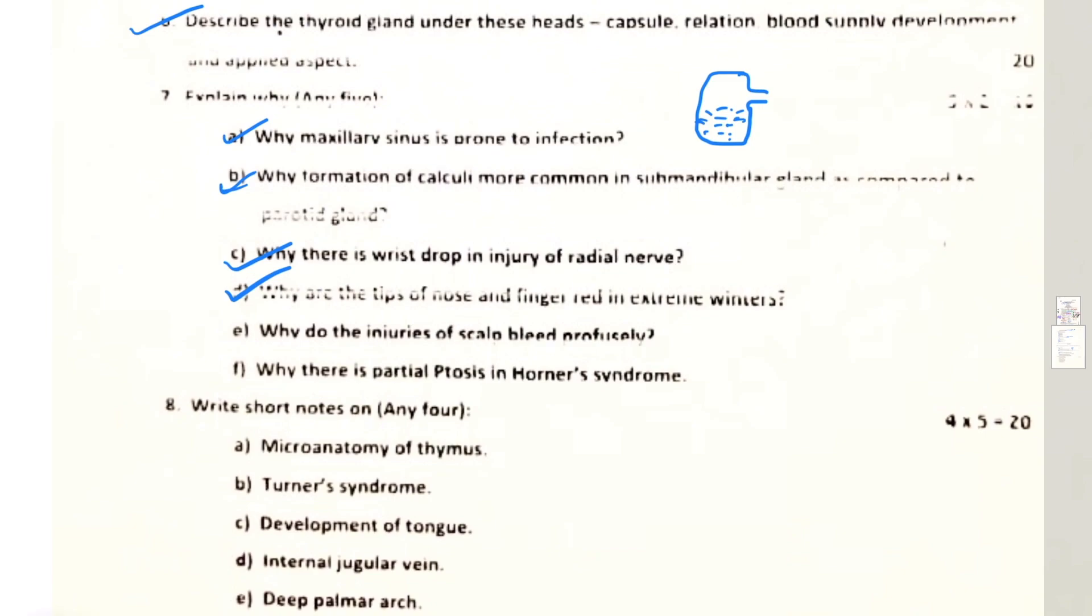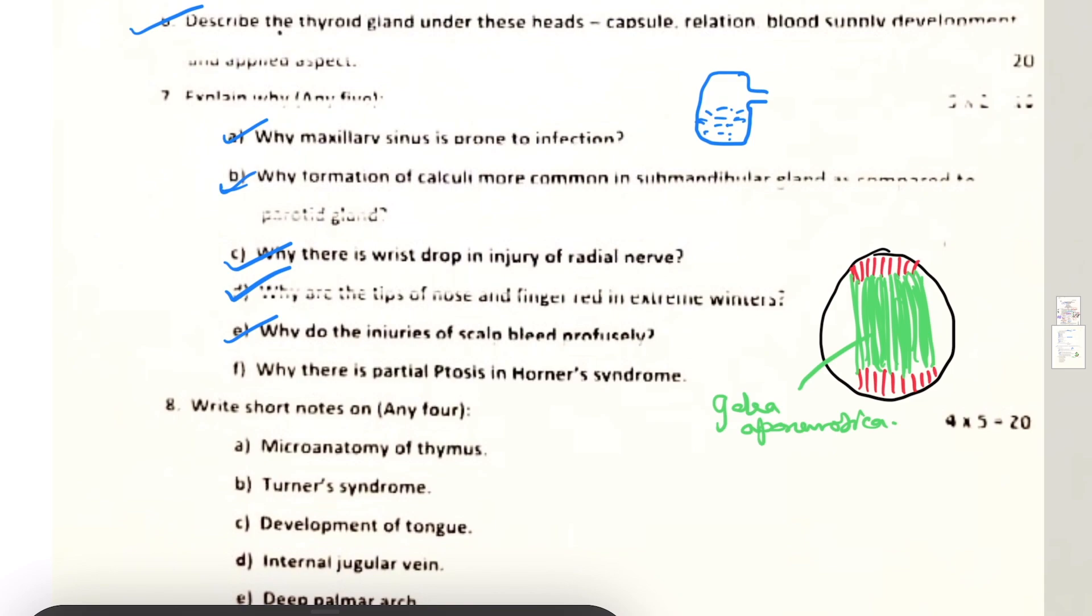Why do injuries of scalp bleed profusely? On the scalp, the third layer here is being formed by occipitofrontalis muscle which has an intermediate tendon, and this is called galea aponeurotica. Wounds that get cut transversely, because of the pull of these fibers, there is gaping in the wound and that's why it does not heal easily and there is more of bleeding.